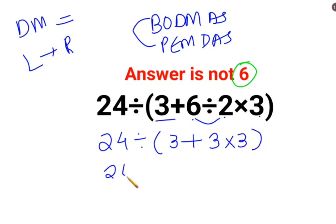So this becomes 24 divided by 3 plus 3 multiplied by 3 is 9. So this becomes 24 divided by 3 plus 9 is 12.